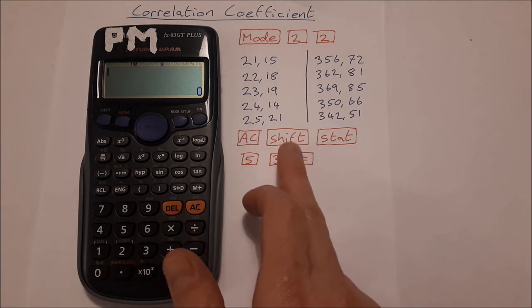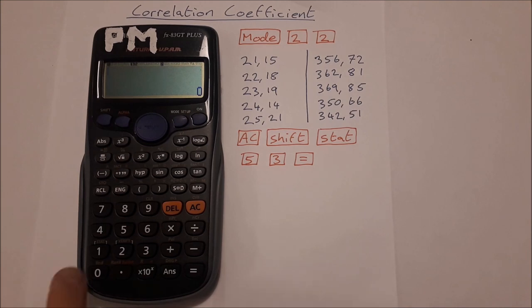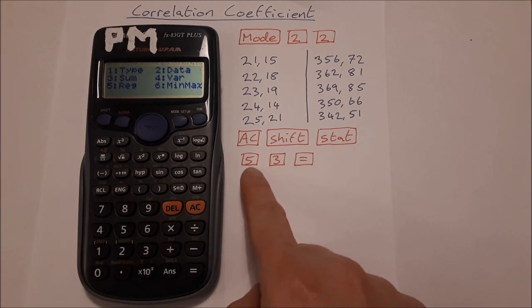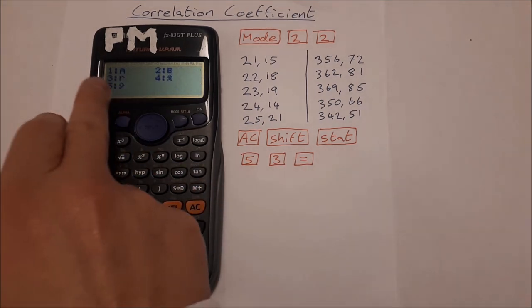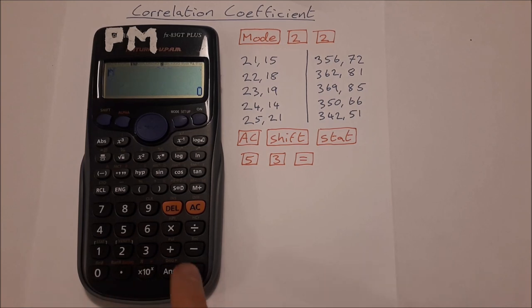Then we're going to press Shift Stat, so Shift and Stat is up above number 1, then 5 3 equals. Five will give us reg, three will give us r, that's our correlation coefficient, and then just press equals.